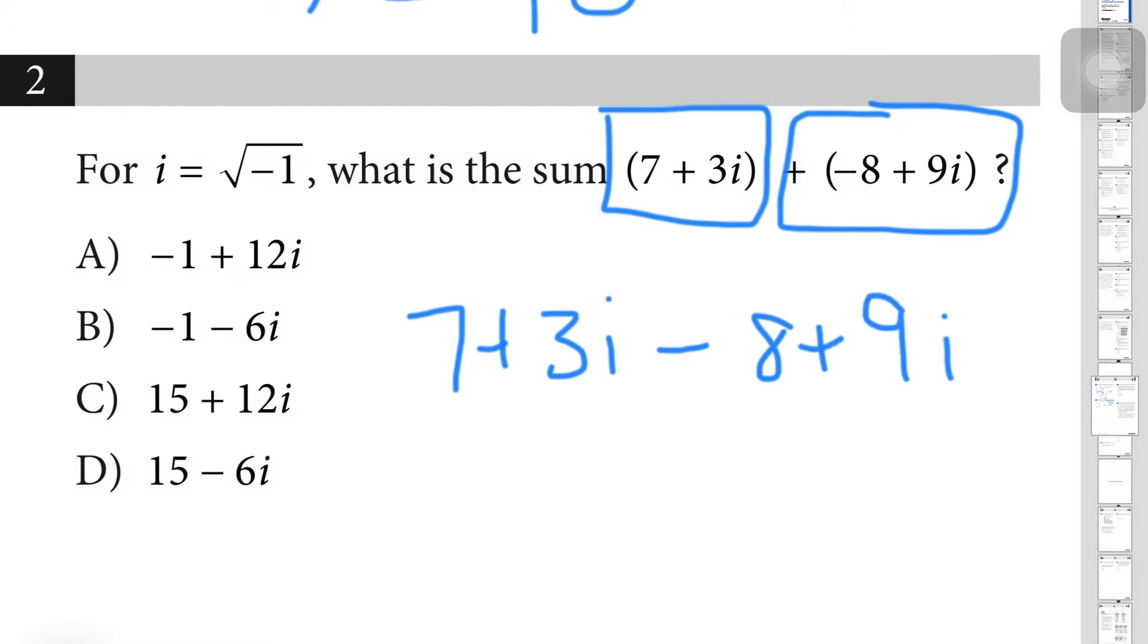Here we can just simplify further. Keep the numbers the same, so these two get paired up, and then the numbers with the i's you clump them together as well. So you get -1 + 12i, and that would be A.